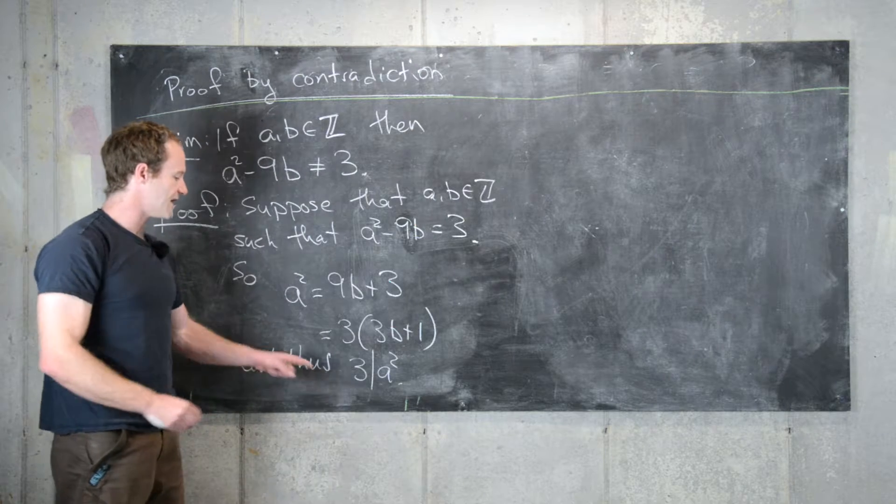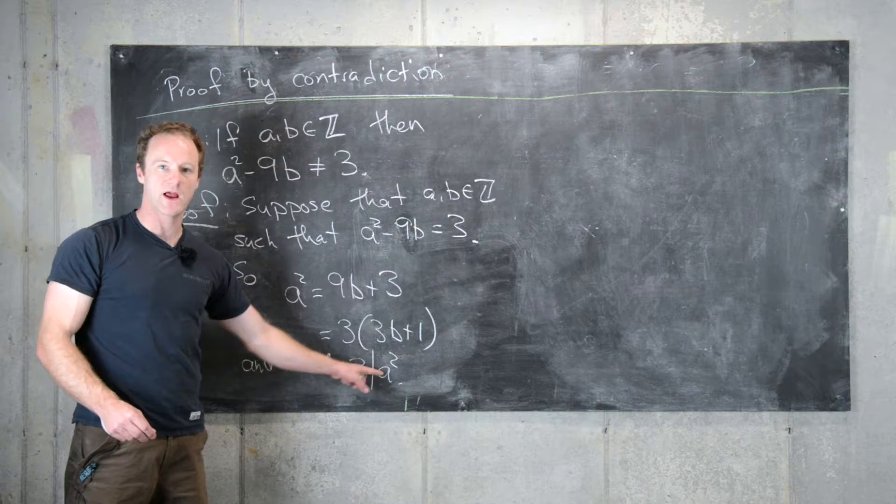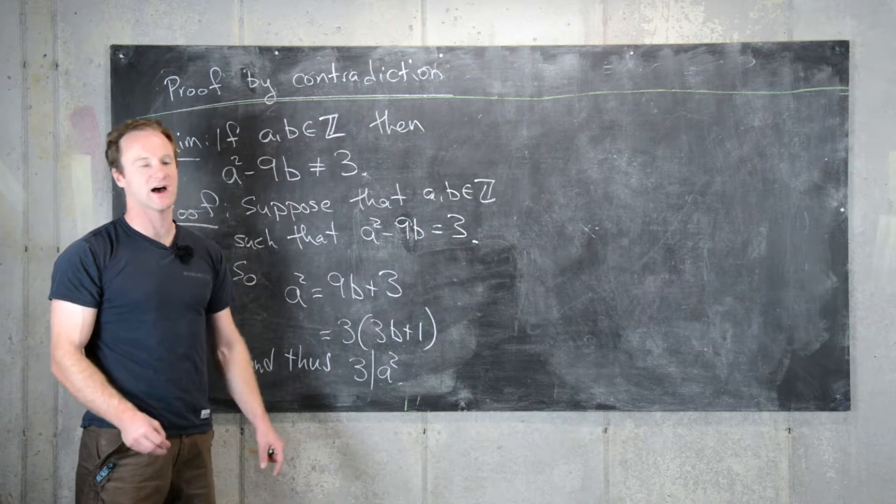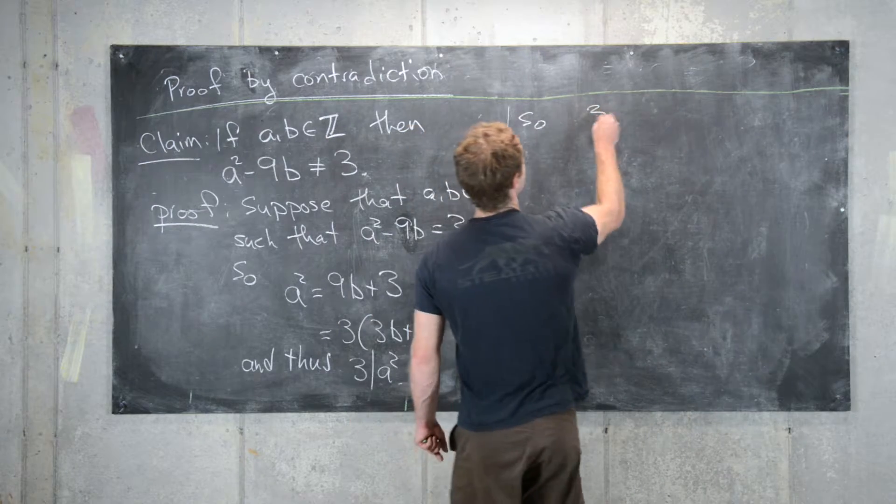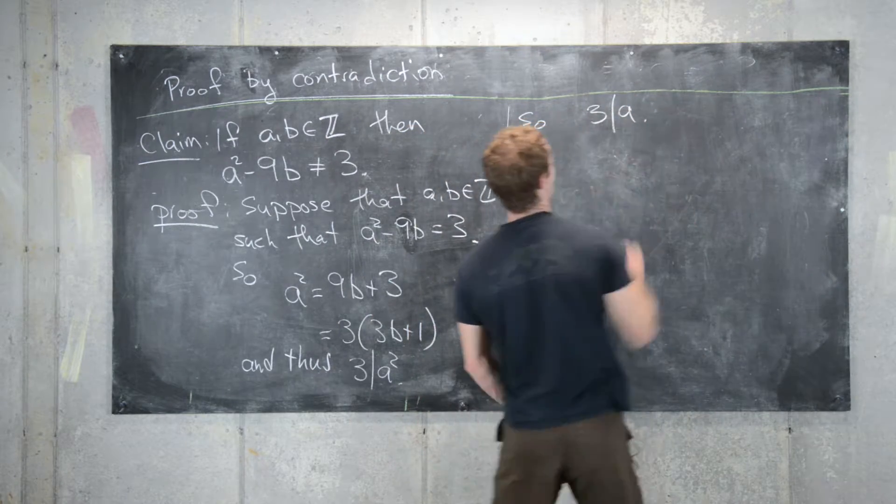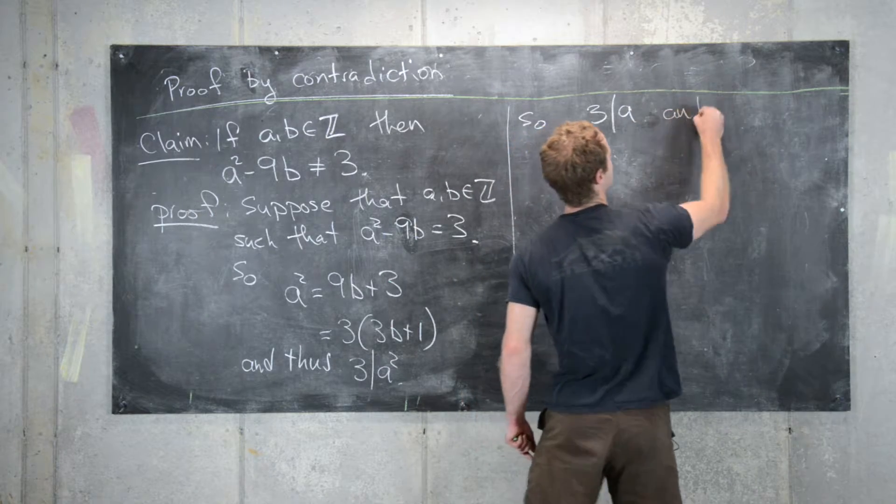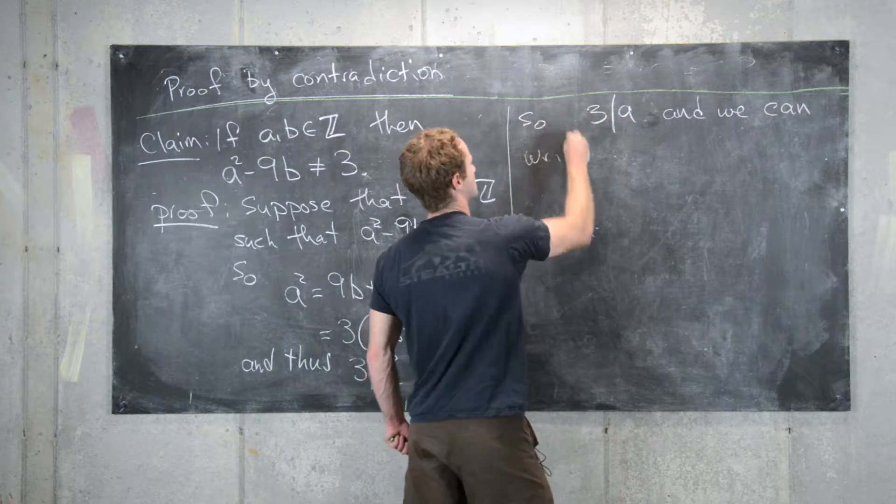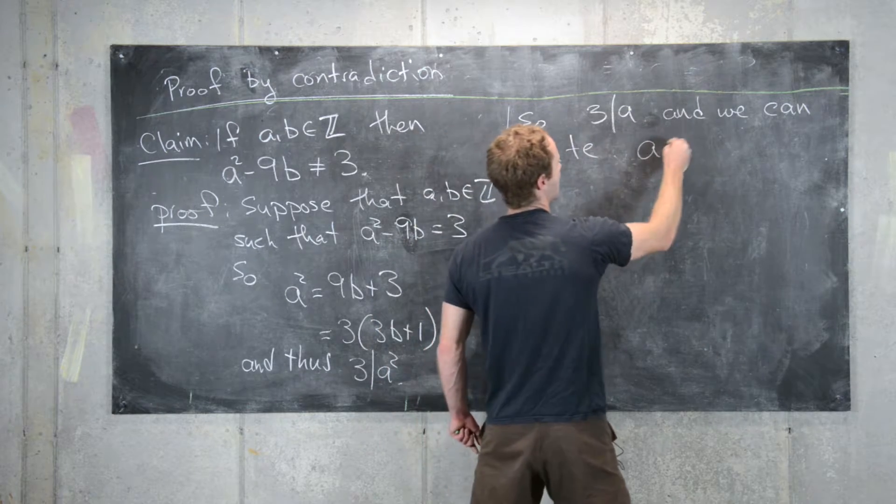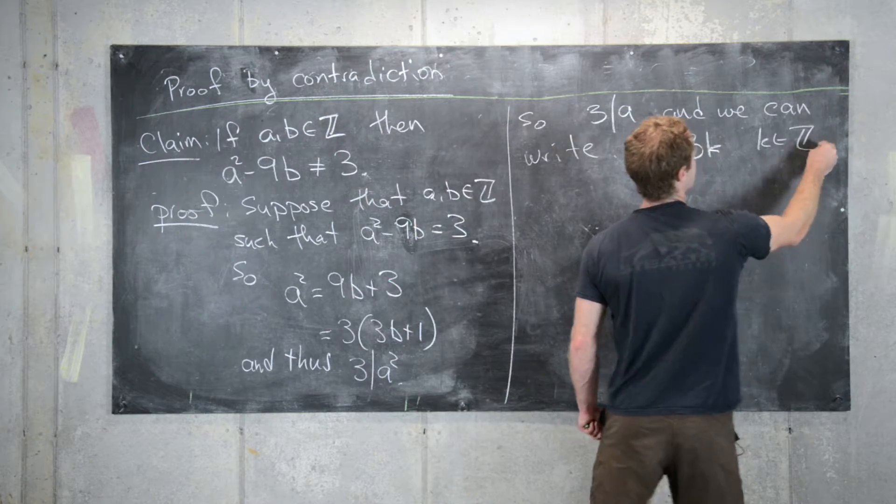But it's a pretty easy thing to see that if a prime divides a squared, then that prime also divides a. So that means 3 also divides a, and we can write a equals 3 times k for some integer k.